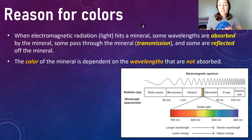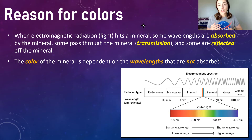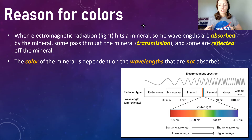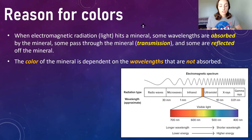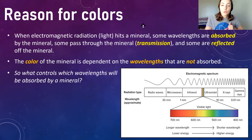As we can see from the electromagnetic spectrum, wavelengths of light determine what color you see when it's reflected or transmitted and hits your eyes. Wavelengths around 700 nanometers in the visible light spectrum are red, around 600 are orange, 500 green-blue, and 400 blue-purple. So now the question is: what controls which wavelengths will be absorbed by the mineral?